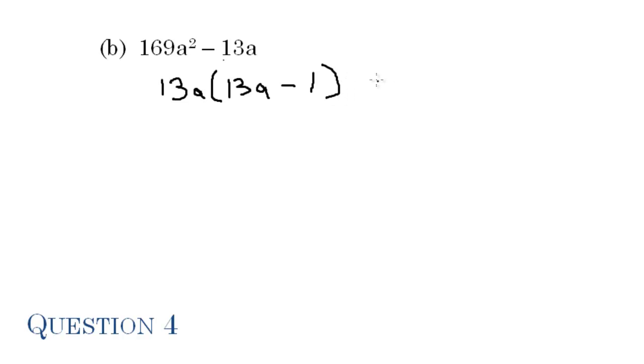That's how we factorize that equation. Let's test it. When we multiply 13a by what is in the brackets we're supposed to get the original equation. So 13a times 13a is 169a squared, and 13a times minus 1 is minus 13a. It's proved, our answer is correct.